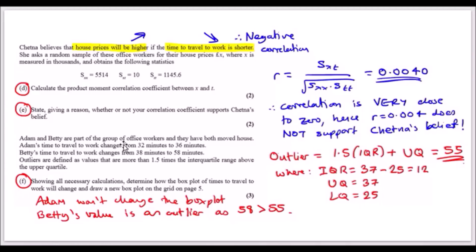Adam and Betty are part of the group of office workers, and they have both moved house. Adam's time to travel to work changes from 32 minutes to 36 minutes. Betty's time changes from 38 minutes to 58 minutes. That's a significant change—20 minutes ahead—so that could practically be an outlier. Outliers are defined as values that are more than 1.5 times the interquartile range above the upper quartile. In math terms, outlier is 1.5 times IQR plus the upper quartile.